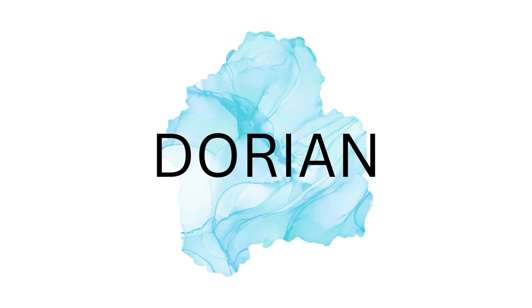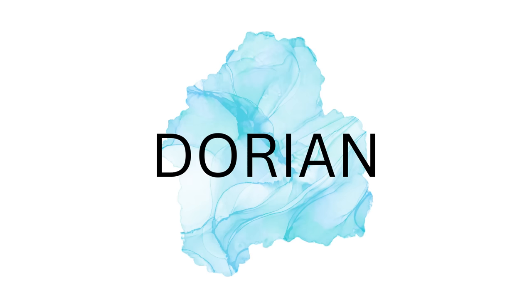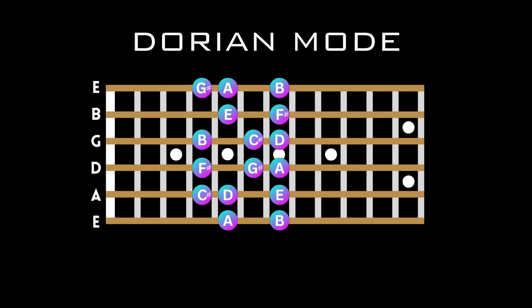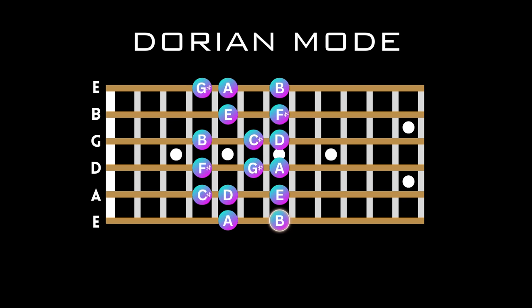Now let's move on to the second mode, which is referred to as the Dorian mode. As this is the second mode and the two chord is minor, then this tells us that the tonality of this mode is also minor. To play this mode, you simply need to play the exact same notes as before, but start from the second note of the scale — in this case, B. You should be able to hear the sound of this mode quite clearly, despite the fact that we're still using the exact same notes as the A major scale.